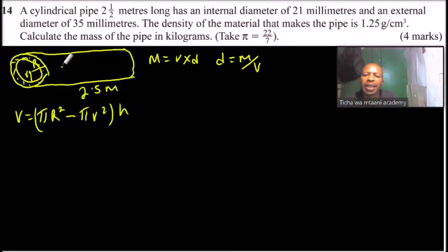Since we have been told that the internal diameter is 21 millimeters and the external is 35 millimeters, and since our density is given in terms of centimeters, we need to convert this to centimeters. So we say that 35 millimeters you divide by 10, it is the same as 3.5 centimeters. And this is the diameter, so we divide by 2. This implies that the external radius is 1.75 centimeter.